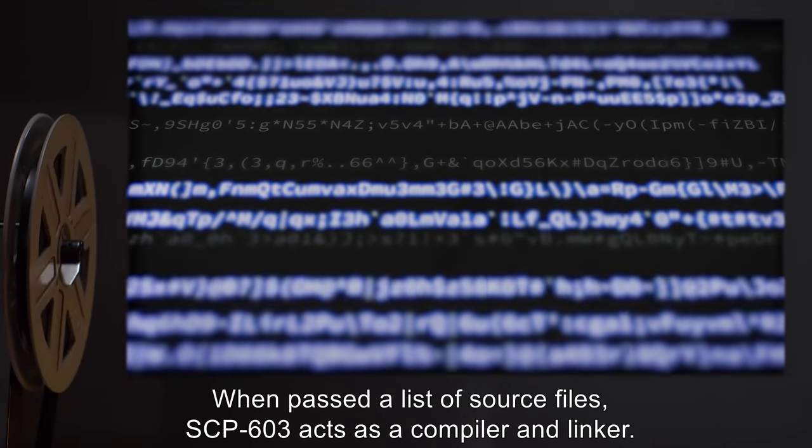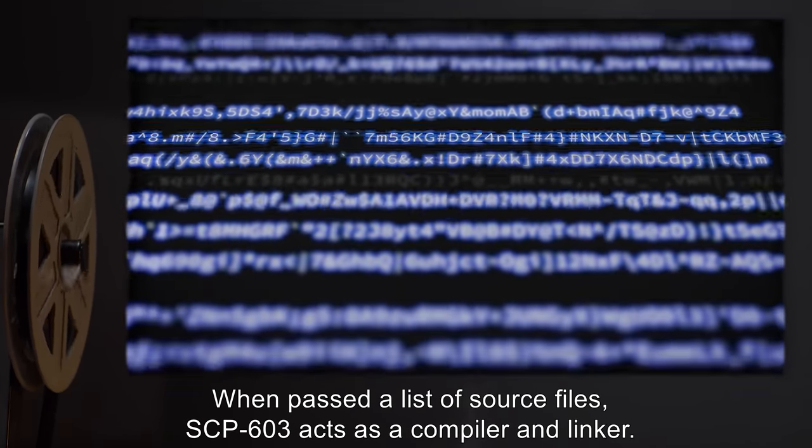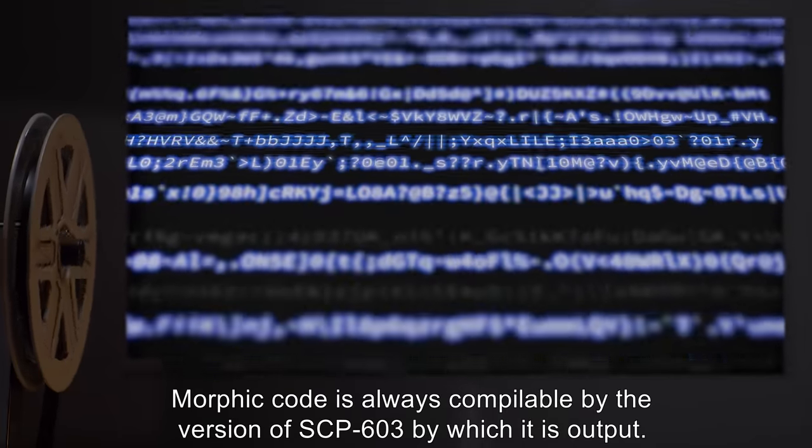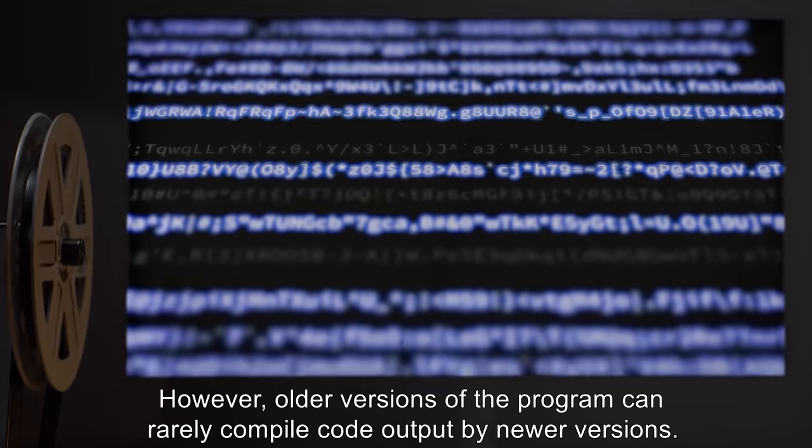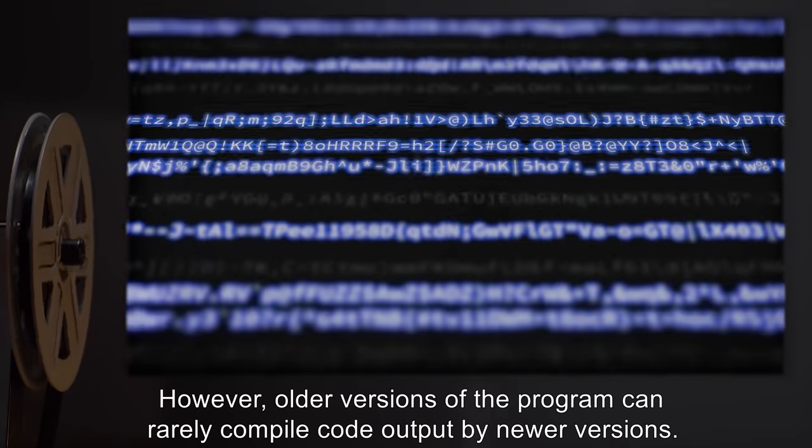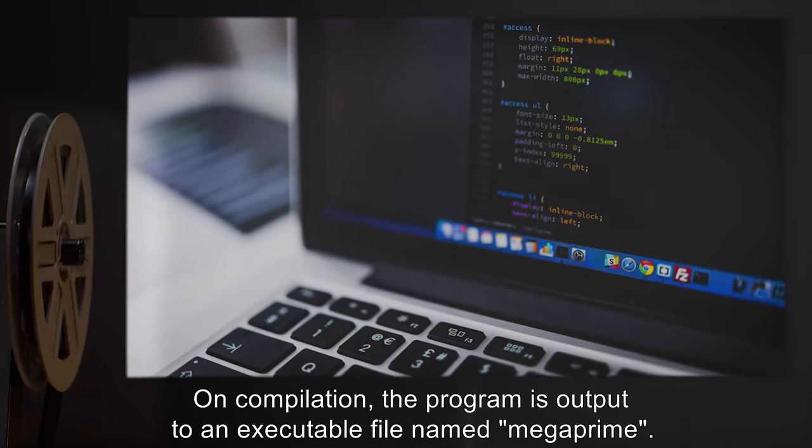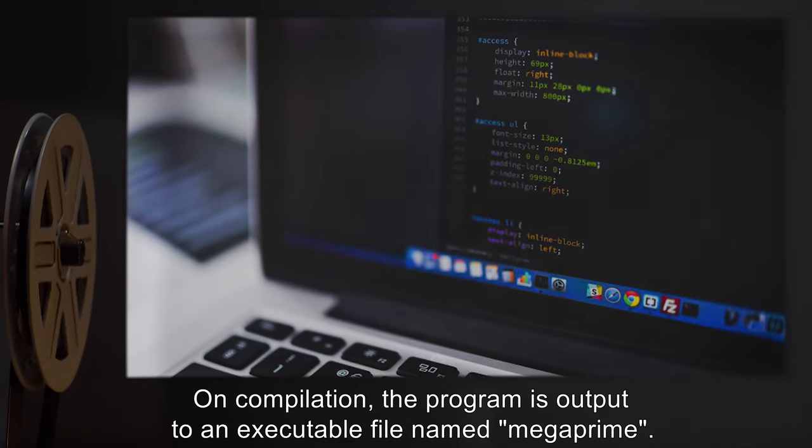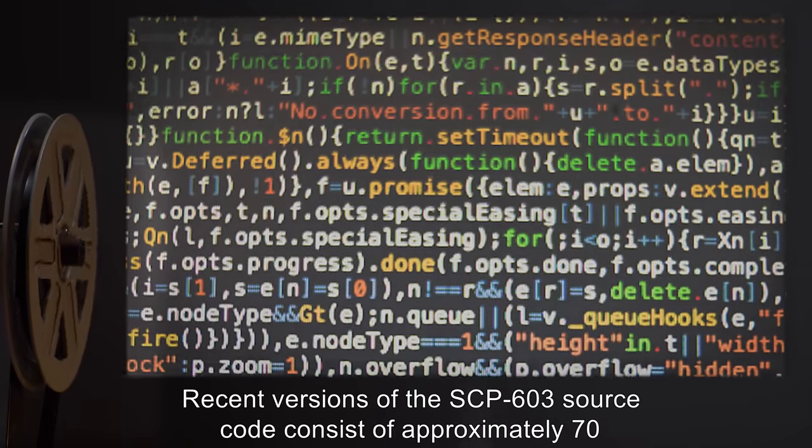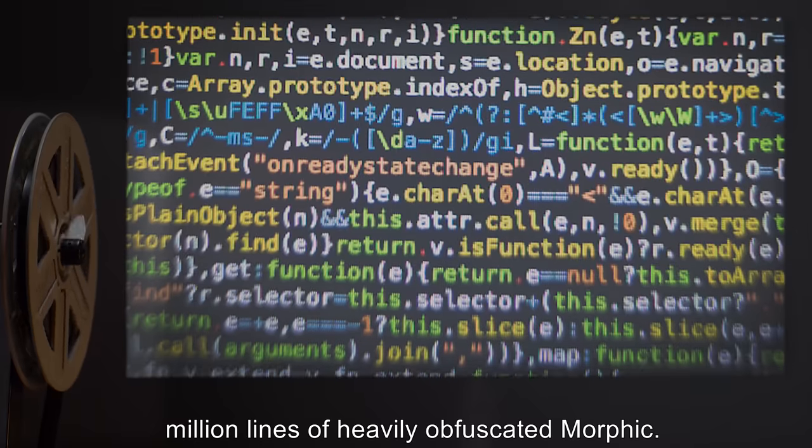When passed a list of source files, SCP-603 acts as a compiler and linker. Morphic code is always compilable by the version of SCP-603 by which it is output. However, older versions can rarely compile code output by newer versions. On compilation, the program is output to an executable file named MegaPrime. Recent versions of the SCP-603 source code consist of approximately 70 million lines of heavily obfuscated Morphic.